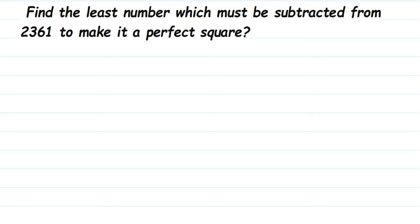Hey everyone, here's a question on square and square root. The question is: find the least number which must be subtracted from 2361 to make it a perfect square. So this given number is not a perfect square. We have to find out the smallest number when we subtract from this number, that number should become a perfect square. So how to do this? Whenever you see this type of question, we have to solve it by using a long division method.